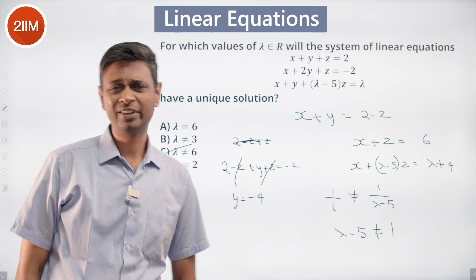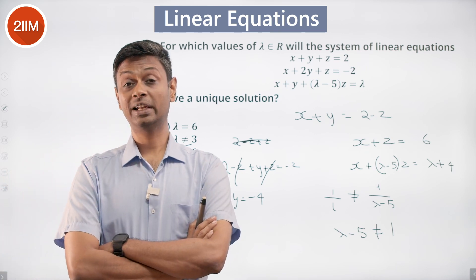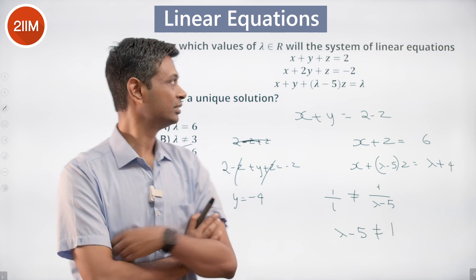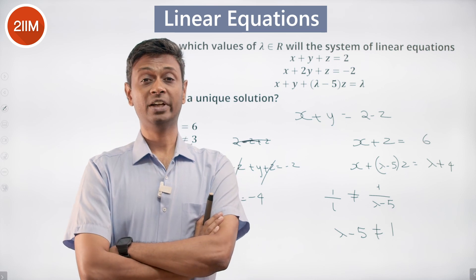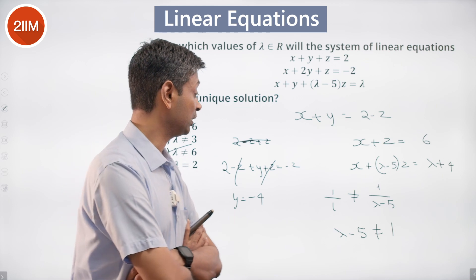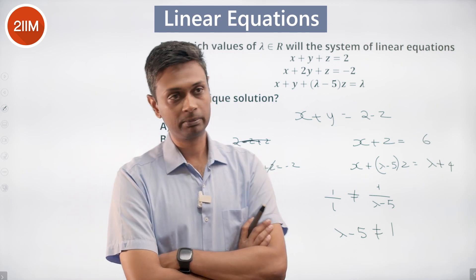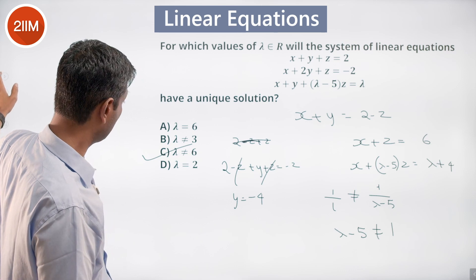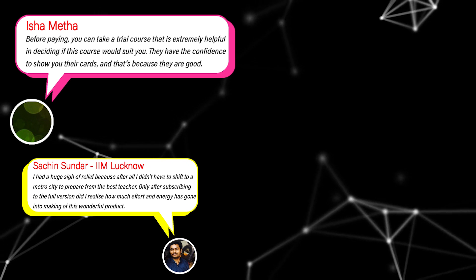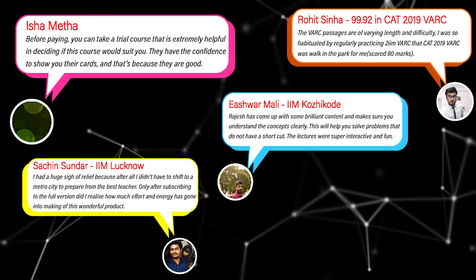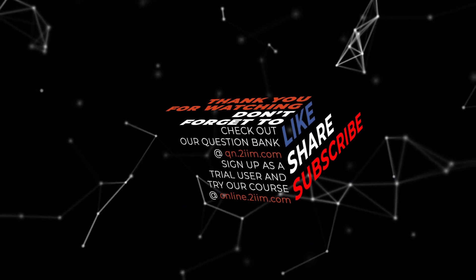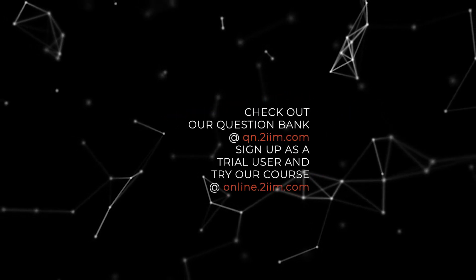So lambda should not equal 6. Alternatively, we could use the matrix determinant approach and check for singularity, but the shortcut here is: simplify x plus y plus z and x plus 2y plus z, find y, plug it in, and apply the condition a1 over a2 not equal to b1 over b2. Lambda minus 5 should not equal 1, so lambda should not equal 6. Done.